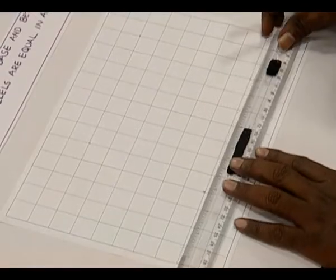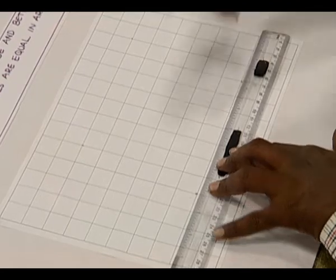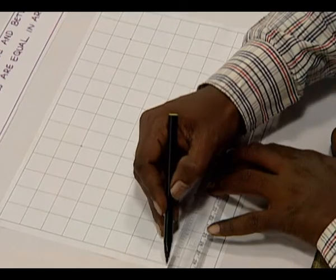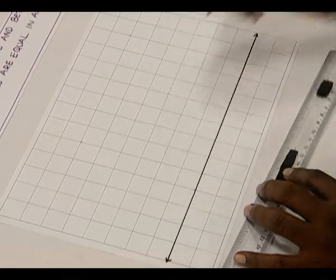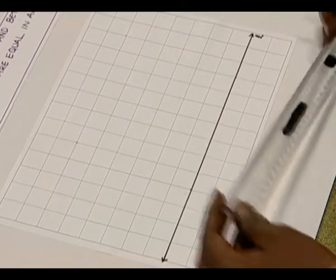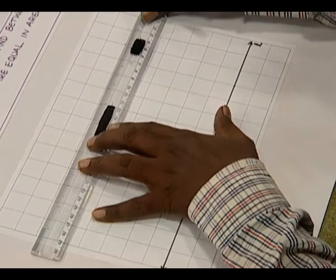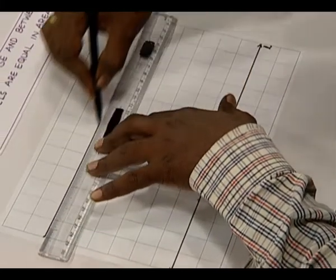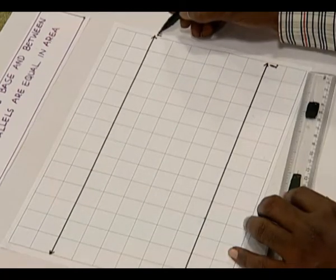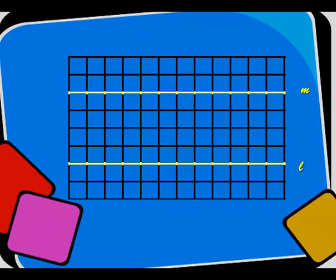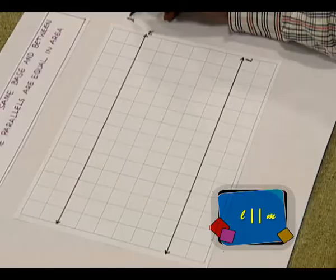Now, we draw two parallel lines on this square paper. I draw a line L, and I draw another parallel line and we name it as M. Now we have two lines, line L and line M. These two lines are parallel to each other. L is parallel to M.